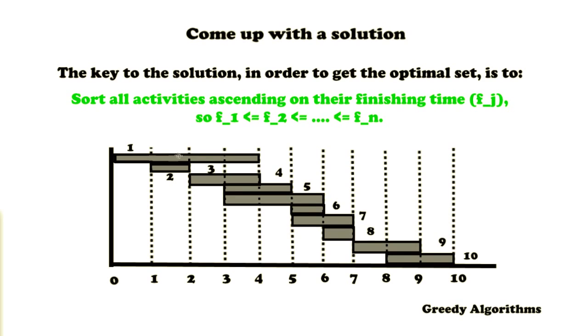So this is what we're going to do. The first finishing time is that of activity 2, so we're going to select that activity. Then 3 has the shortest finishing time, so we're going to select 3. Then 1, but it's not compatible with 2 or 3. Then we have activity 4, which is not compatible with 3.